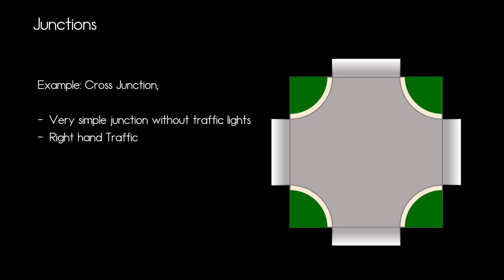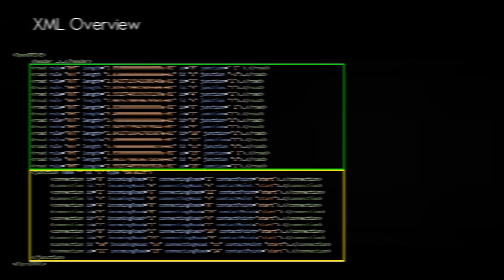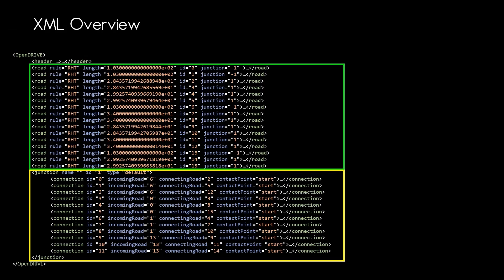So let's start with the XML overview of this cross junction. Then we will start to dive deeper into how that junction works and how you can model it. Here is the XML overview of our roads and the junction. For the junction we need not only the junction itself but also all the road definitions. They are marked green here. And we need the connections within the junction and they are marked yellow.